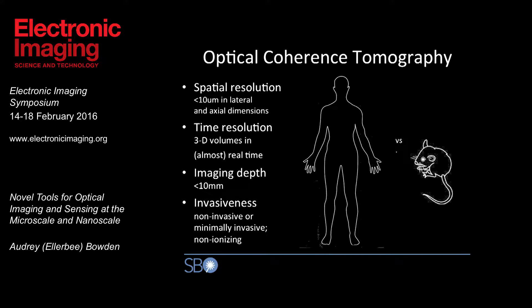Another way to think about OCT is in terms of what we can see compared to technologies we know, such as ultrasound and MRI. Those technologies are usually used on the scale of the human body, and we can see features like organs and things smaller than organs. The types of details we can achieve with OCT in a much smaller model — say at the animal level — are similar to those we can get with MRI or ultrasound in humans. The features are much, much smaller, but we can get the same kinds of detail.